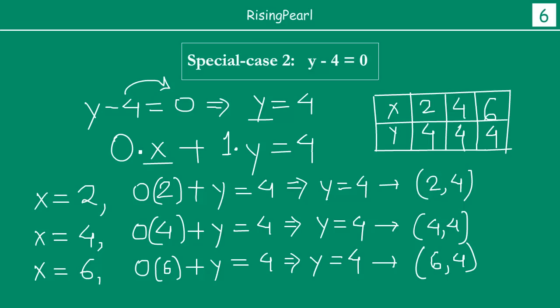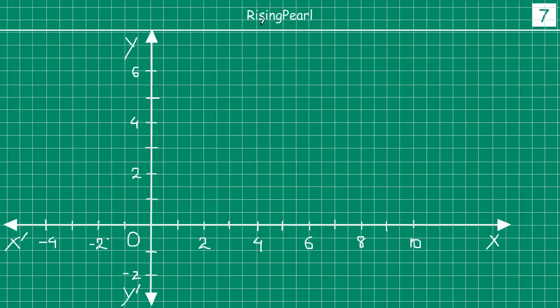Chalo dosto, let's plot this on graph and see what do we get. So here on our graph paper we have drawn our coordinate axes. So this is x, x dash, our x axis. This is y, y dash, our y axis. You'll notice dosto that we have taken every two lengths as one unit. So two small cells we have taken as one unit. And here we have written 2, 4, 6, 8, minus 2, minus 4. And then 2, 4, 6 on the y side, and minus 2, et cetera.